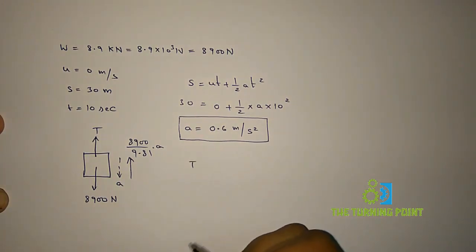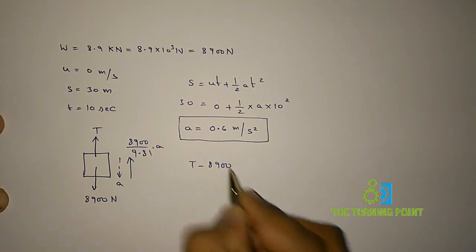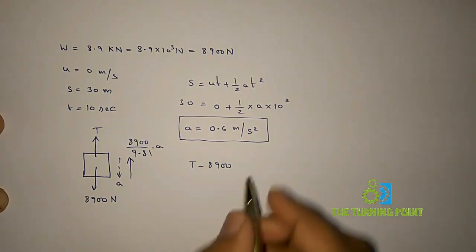T acting vertically upwards, so positive, minus 8900 acting vertically downwards, and this one is acting vertically upwards.